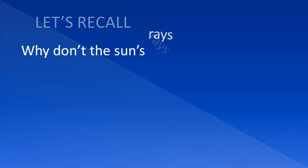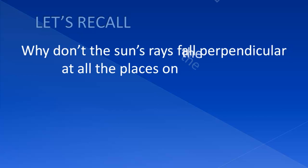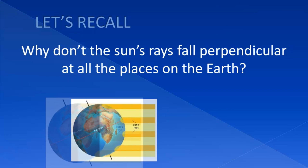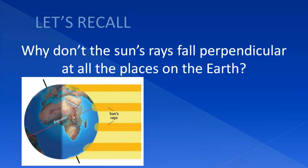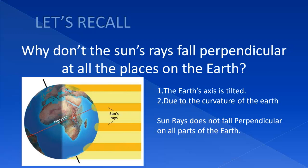Why don't the Sun's rays fall perpendicular at all places on the Earth? There are two reasons for this. The first reason is that the Earth's axis is tilted, and the second reason is the curvature of the Earth — so sun rays do not fall perpendicular on all parts of the Earth.